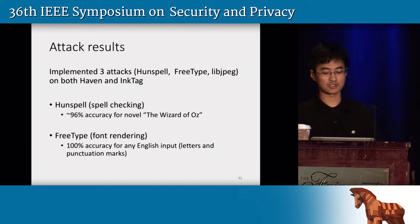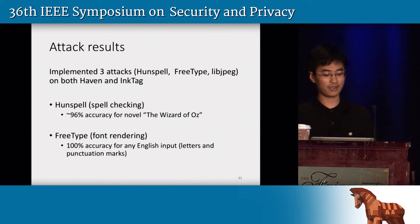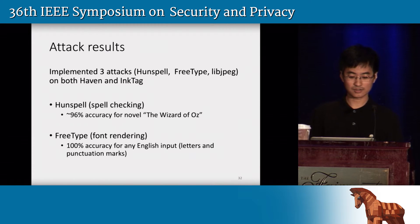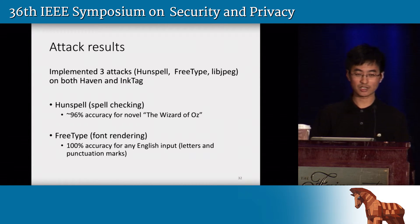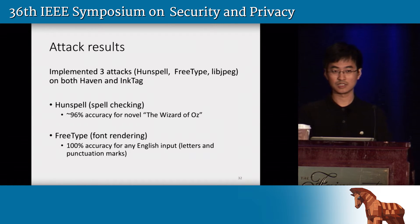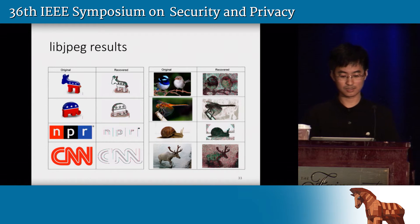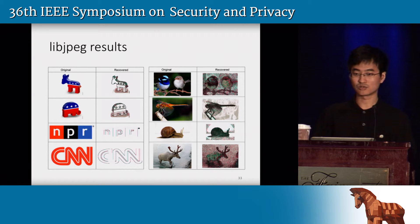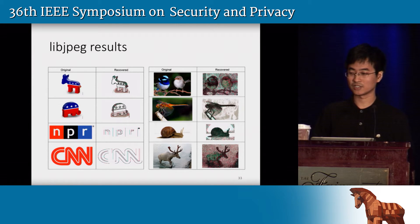Here's a quick summary of our attack results. We have implemented three attacks against Hunspell, FreeType, and libjpeg on both Haven and InkTag. For Hunspell, when we spell checked the entire novel The Wizard of Oz, we got around 96% accuracy. For FreeType, a font rendering library, we got perfect accuracy for any English input, including letters and punctuation marks. For libjpeg, the reconstructed images still tell a lot of information — you can clearly see the content of the original images.